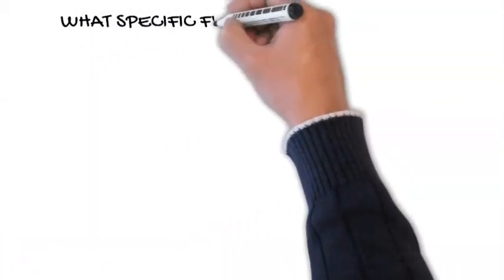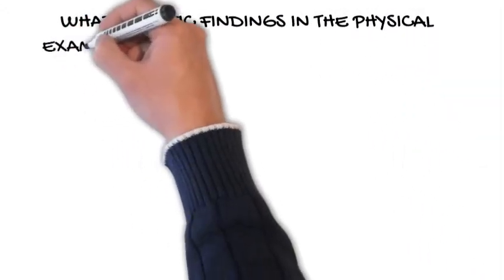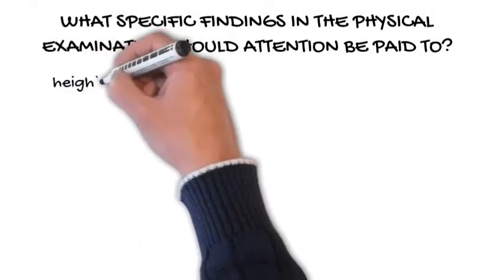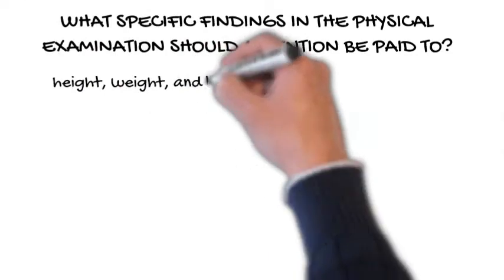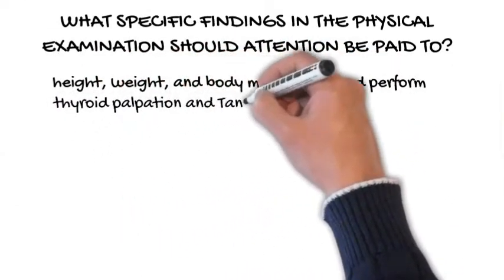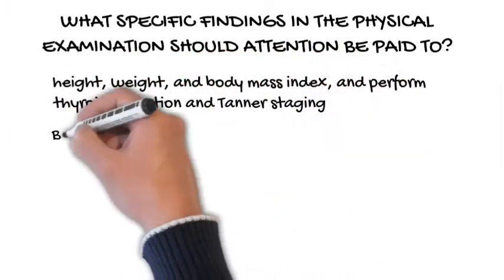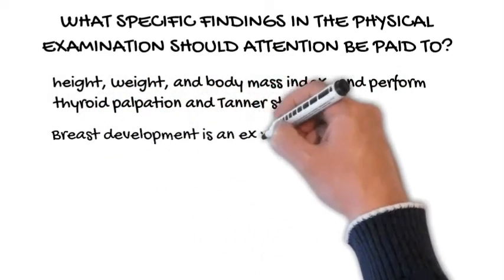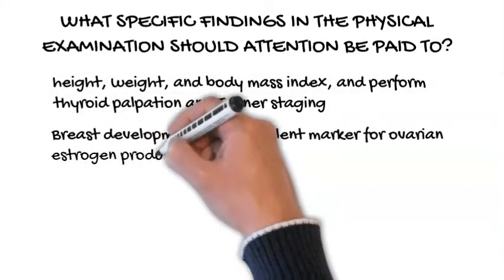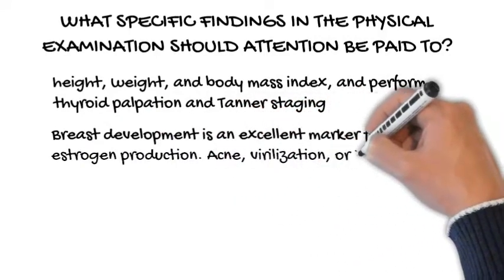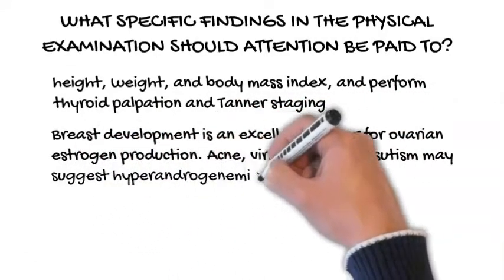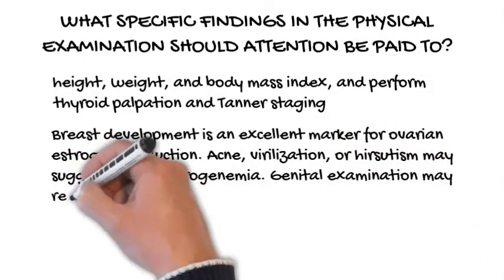What specific findings in the physical examination should attention be paid to? The physician should measure the patient's height, weight, and body mass index, and perform thyroid palpation and Tanner staging. Breast development is an excellent marker for ovarian estrogen production. Acne, virilization, or hirsutism may suggest hyperandrogenemia.